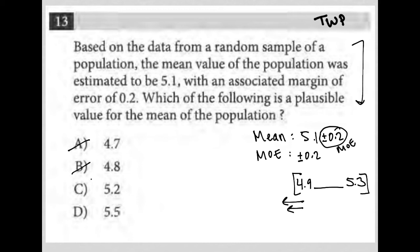5.2 is a yes, because that is within here. So, it's within our parameters, given our margin of error.